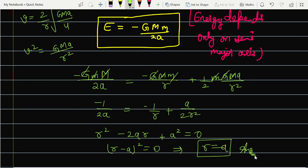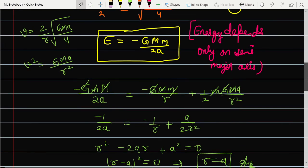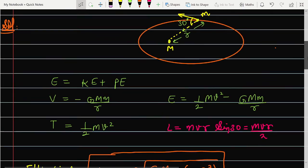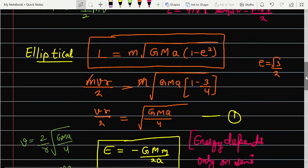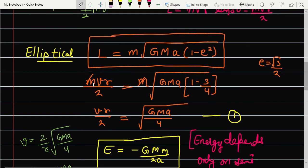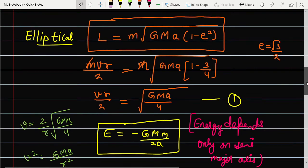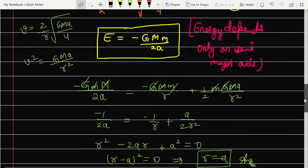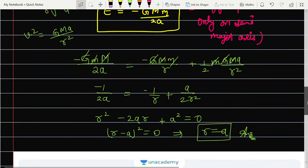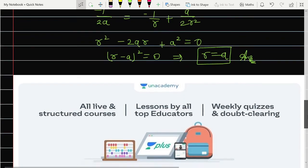So I hope the concept is clear to you. Let's do a quick revision. What you are going to do - first of all you should know that the energy of elliptical orbit is minus GMm upon 2a. You will equate this to half mv square minus GMm upon r. Second, the angular momentum at this instant you will equate with the elliptical orbit angular momentum. You will get the velocity value, and then put that velocity value in the energy conservation equation to get r equals to a.